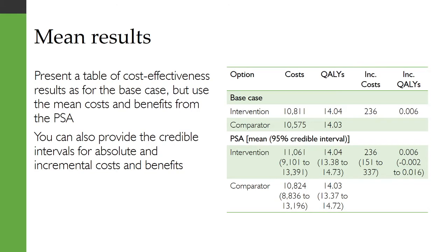One way that you can present the results of a PSA is by using the mean results across the simulation sets. Present a table of cost-effectiveness results as for the base case, but use the mean costs and benefits from the PSA. You can also provide the credible intervals for absolute and incremental costs and benefits, like I've shown in this table on the right.